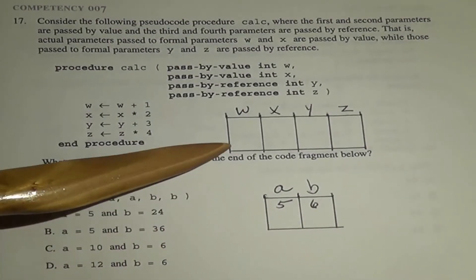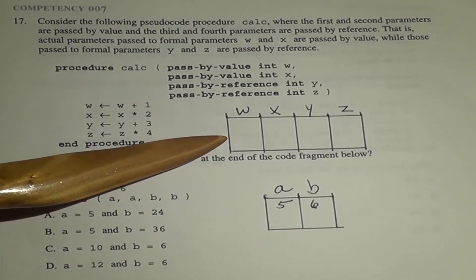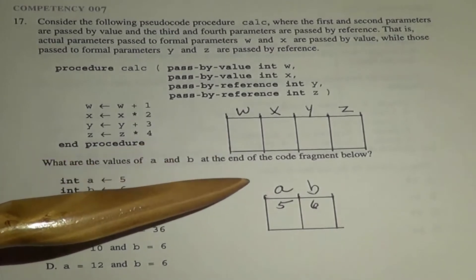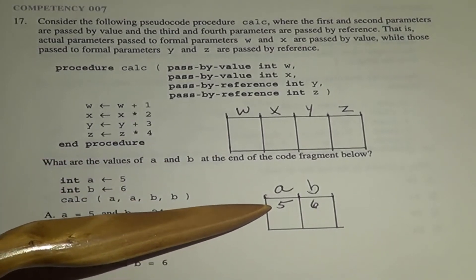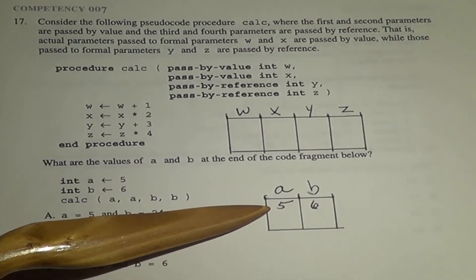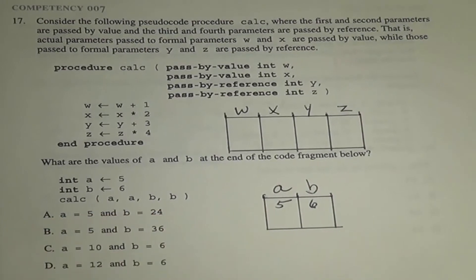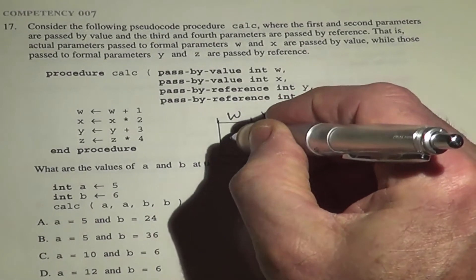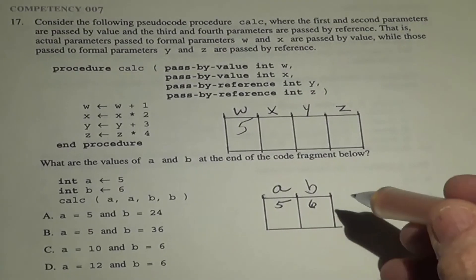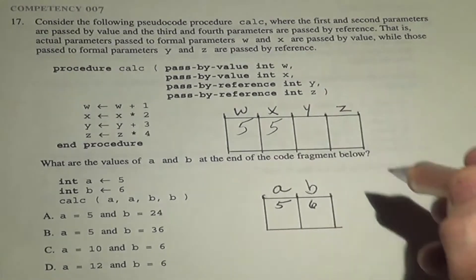It's helpful if you just draw out a little chart or boxes or something to help you keep track of what the values are. So if we send the value of A, which is 5, to W when we call it, that means W gets a 5. X also gets a 5.